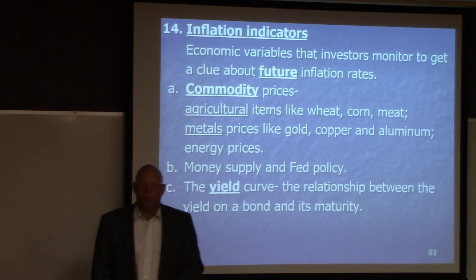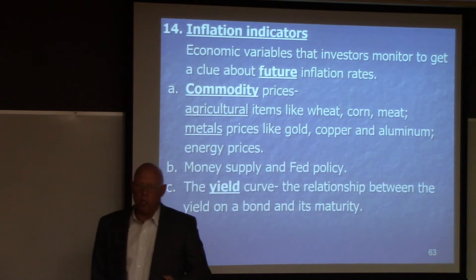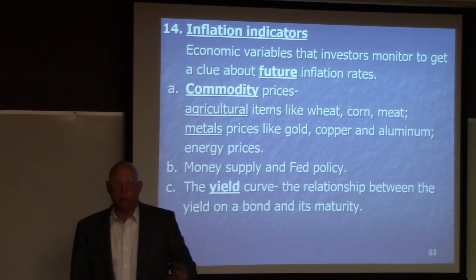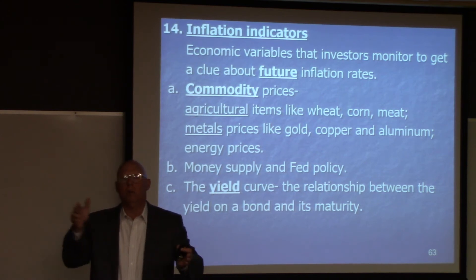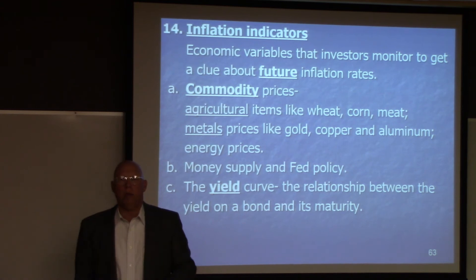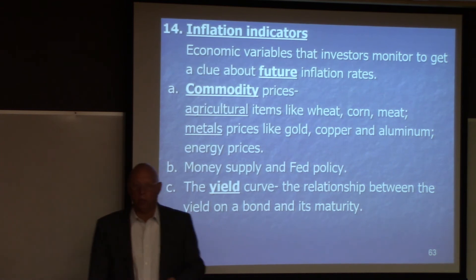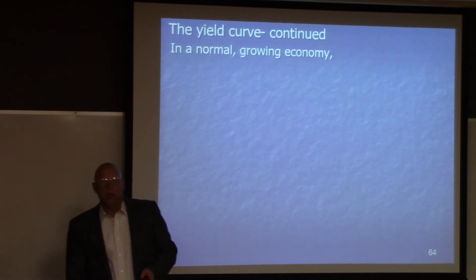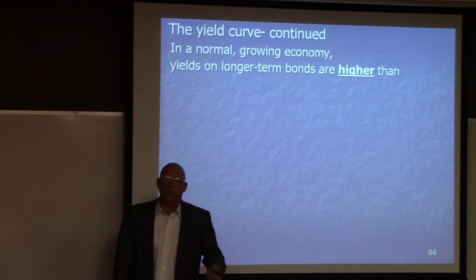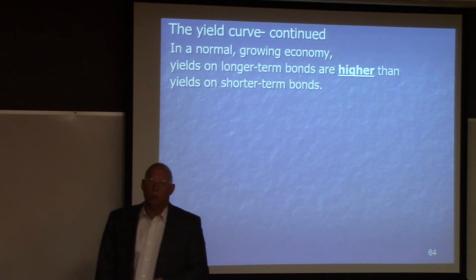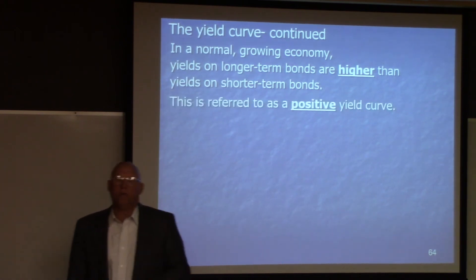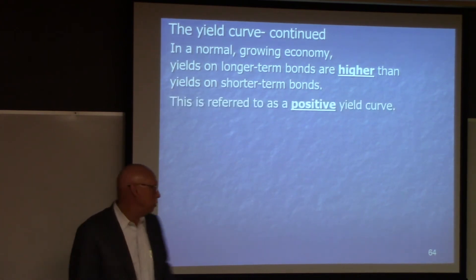Let's take a look at the yield curve — the relationship between the yield on a bond and its maturity. Generally speaking, the longer the maturity, the higher the yield. That is a typical relationship. In a normal growing economy, yields on long-term bonds are higher than yields on short-term bonds. This is referred to as a positive yield curve.